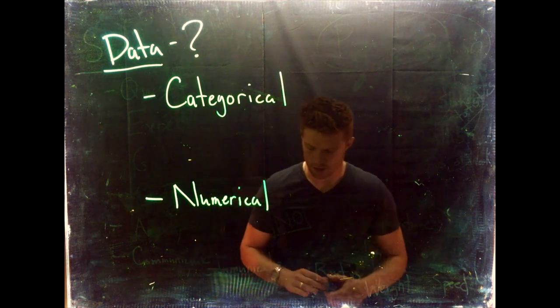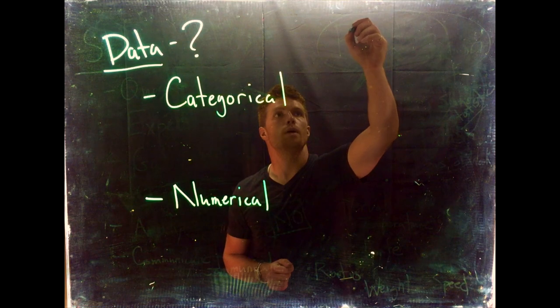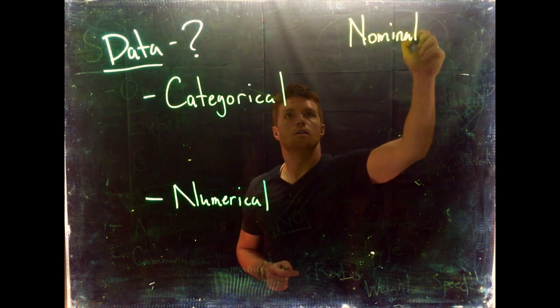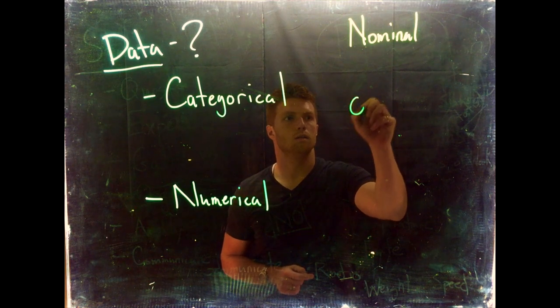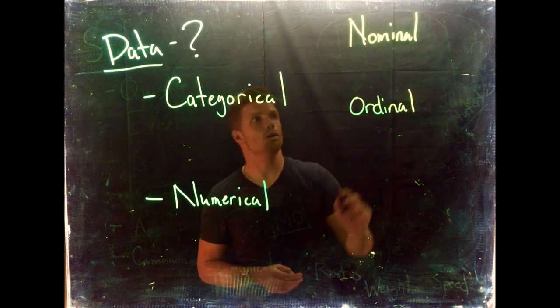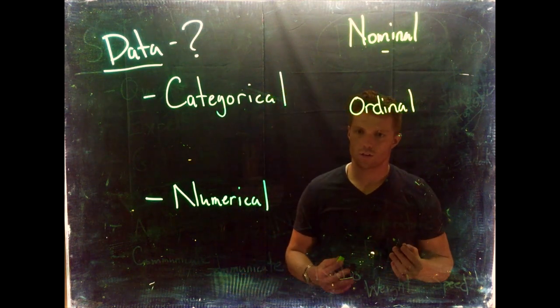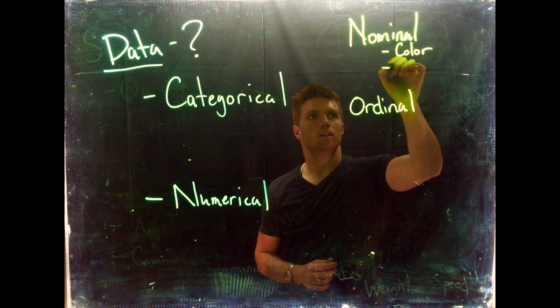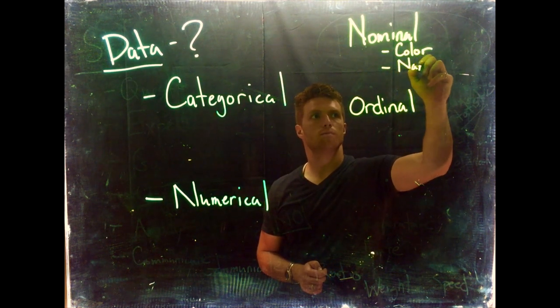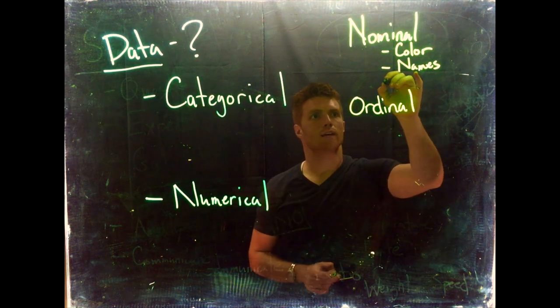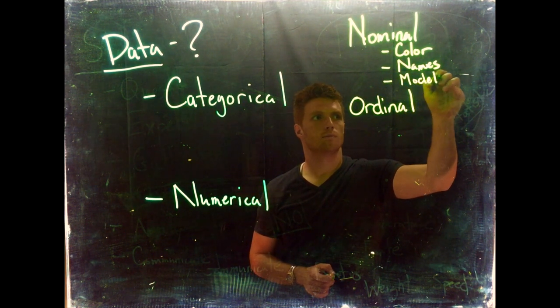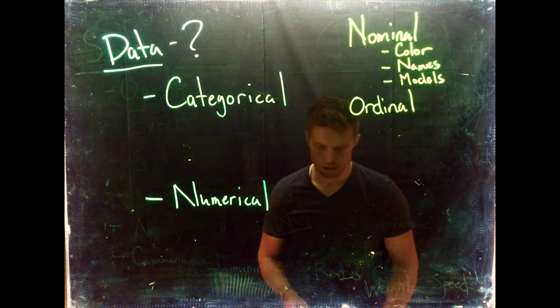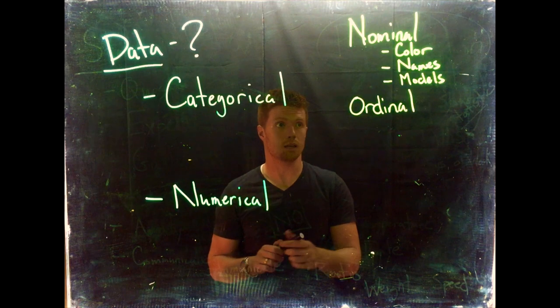Now categorical data can be further broken down into two parts. We can talk about nominal data and we can talk about ordinal. Nominal data is data that is categories - we've got labels of things and it doesn't have any real set order. We can look at things like color, names, models of a car - where we can rearrange the data without losing meaning.